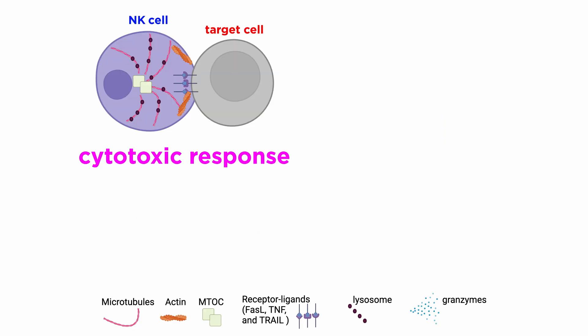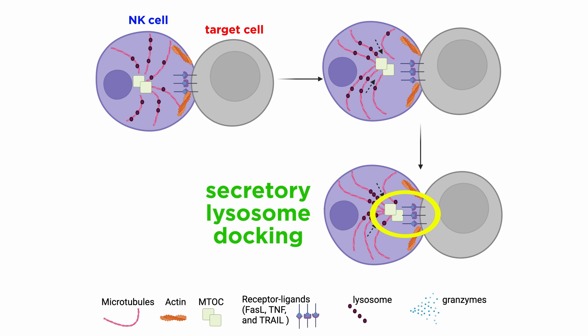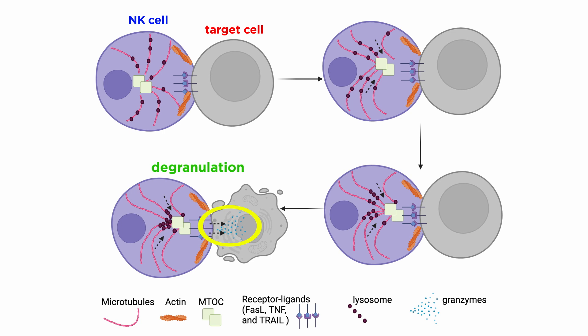The NK cell cytotoxicity response is divided into several steps. First is the formation of an immunological synapse between the target cell and the NK cell, leading to the reorganization of the cellular actin cytoskeleton. Polarization of the microtubule organizing center, MTOC, and secretory lysosome toward the lytic synapse occurs in the next step. Then the secretory lysosome docks at the plasma membrane of NK cells, and finally the fusion of secretory lysosome with the plasma membrane of target cells occurs. The final act is the release of cytotoxic molecules such as perforin and granzyme in a process known as degranulation.